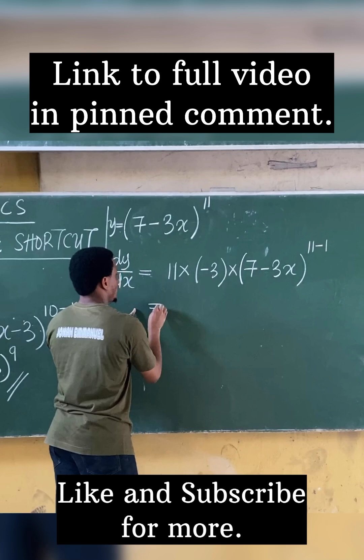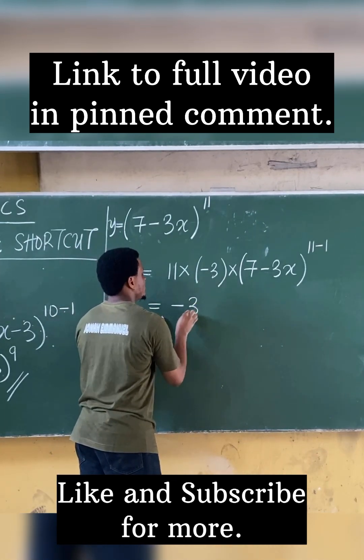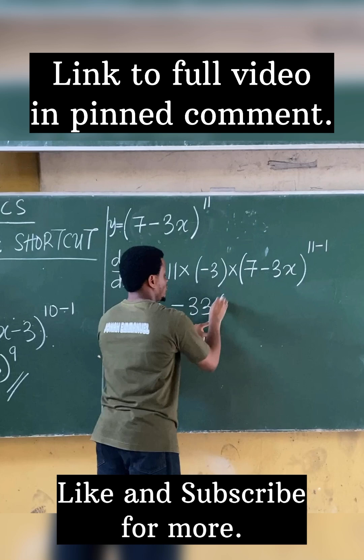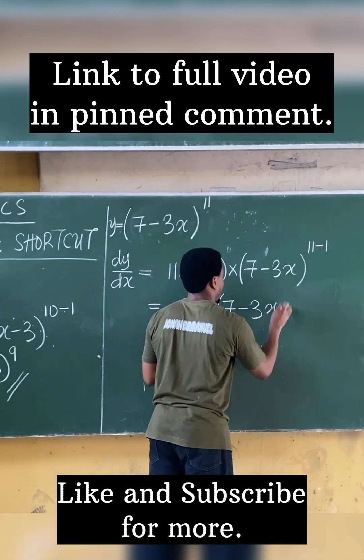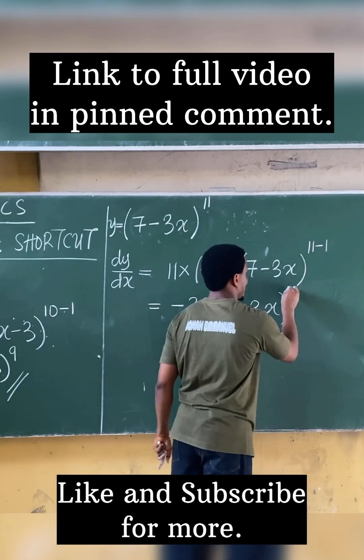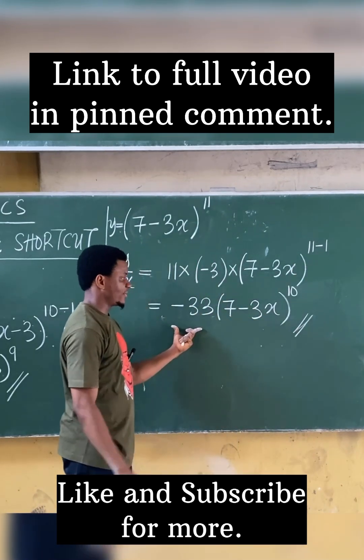This equals 11 times -3, which gives -33, times what I have here: 7 - 3x. That becomes 11 - 1, which gives 10. So I'm having -33 times (7 - 3x)^10.